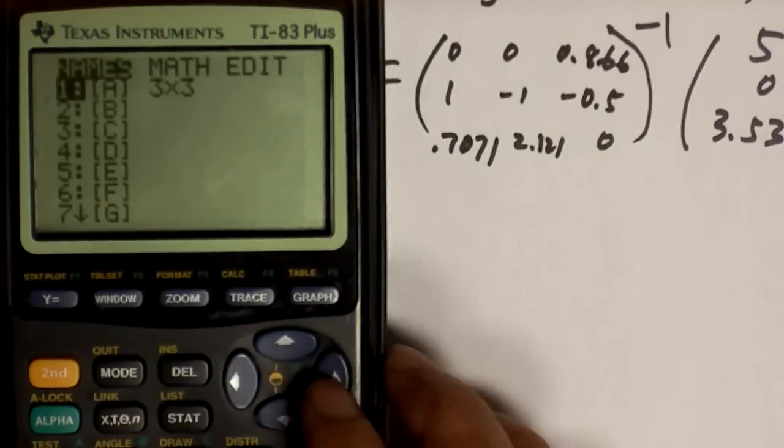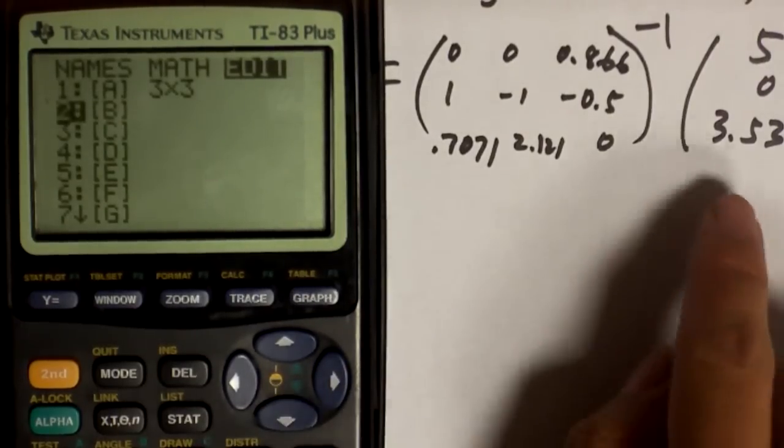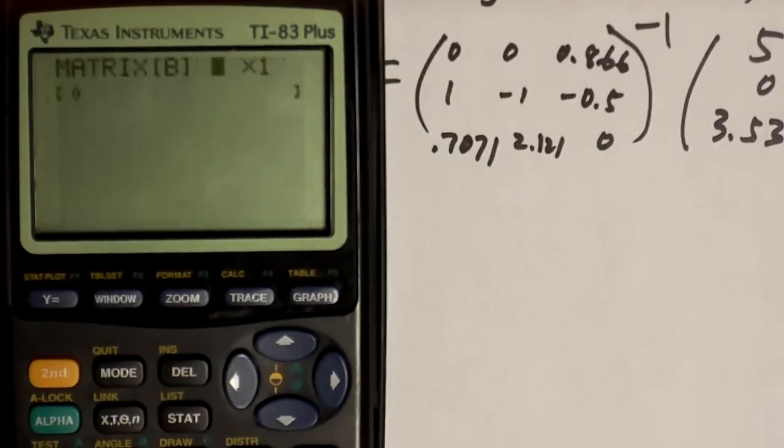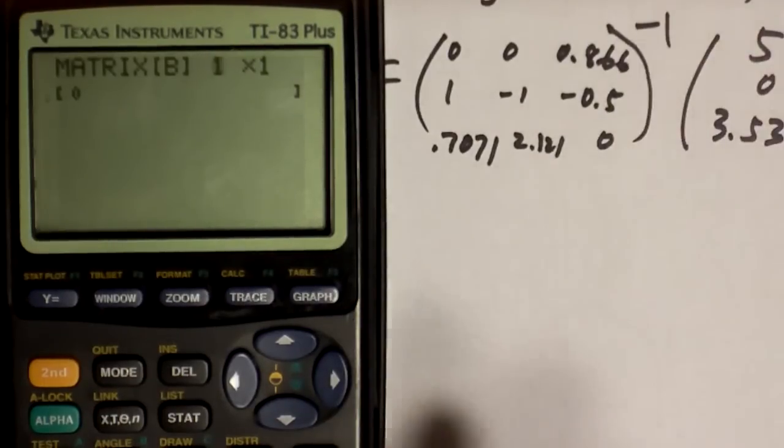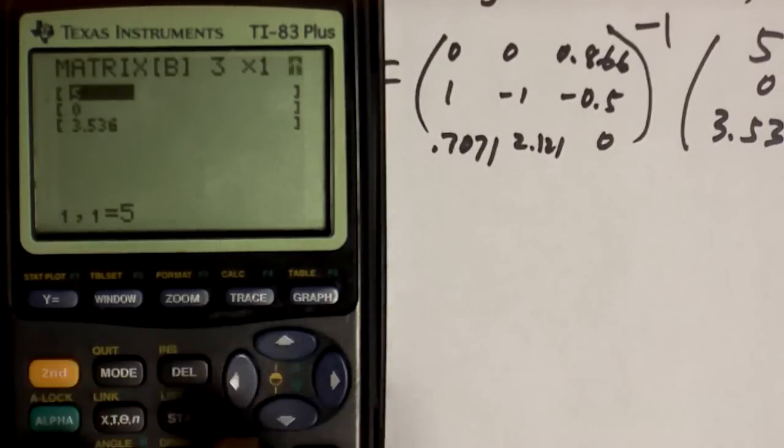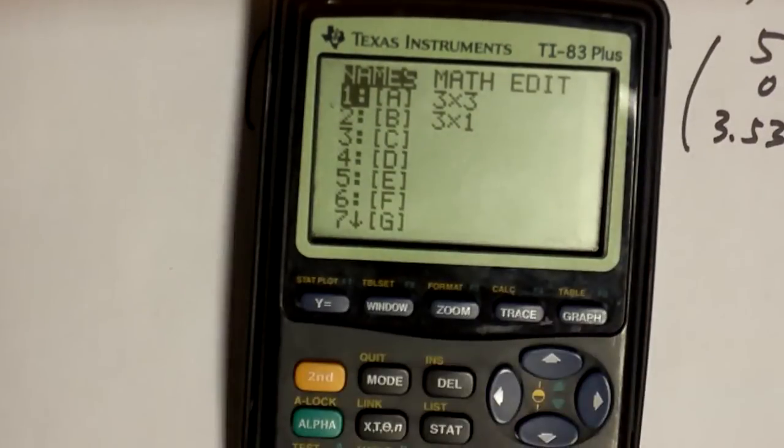Let's go back to the screen by pressing 2nd matrix. Again, go to the edit. And now, we're going to punch in the numbers for the matrix B. So, go to B, enter. That's three rows and one column, so you put 3 by 1. Then, you have these three places to put numbers. Here, it's 5, 0, 3.536, enter. Okay, if you go back by pressing 2nd matrix, as you can see, you have matrix A and B ready.